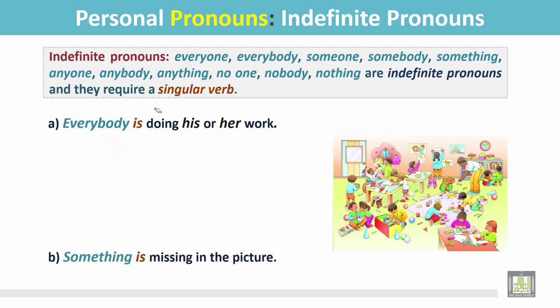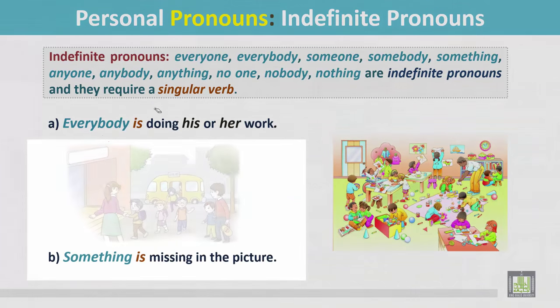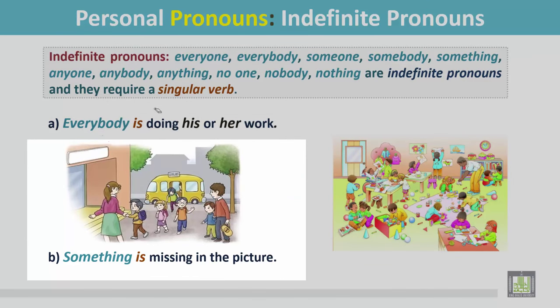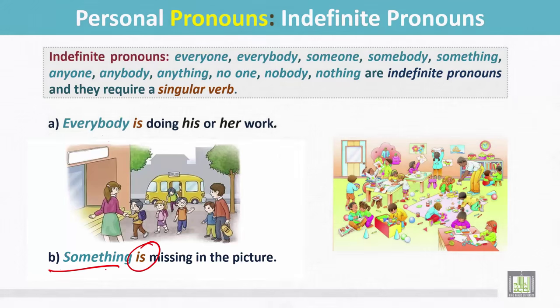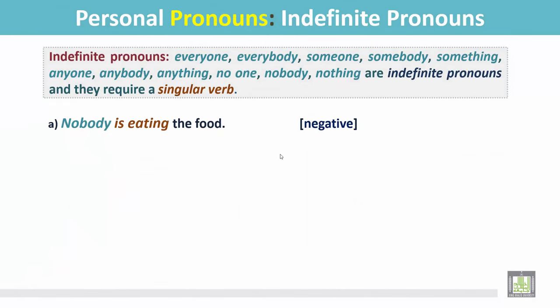Example B: Something is missing in the picture. There is something missing here — the name of the school is missing. Something requires a singular verb.